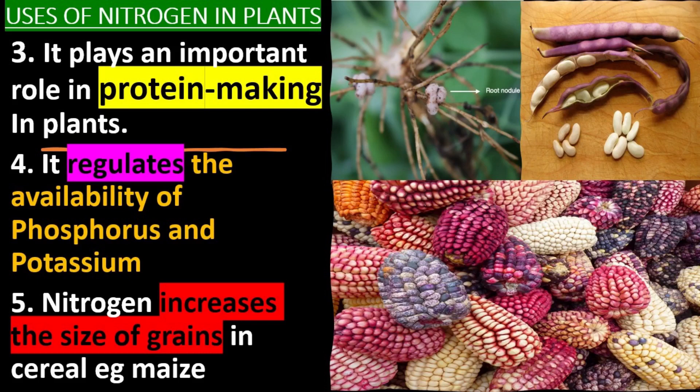For example, bacteria in root nodules of a legume like bean fix nitrogen in the soil to make proteins found in the pod seeds. It regulates the availability of phosphorus and potassium. Nitrogen also increases the size of grains in cereals like maize.